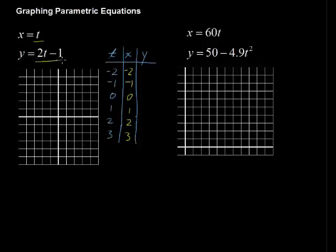y is defined by 2t minus 1. So we're going to say for the first one, if t is negative 2, then we've got 2 times negative 2 minus 1, and that gives us negative 5. And we can go right down the line filling in the appropriate y values: negative 1, 1, 3, 5.